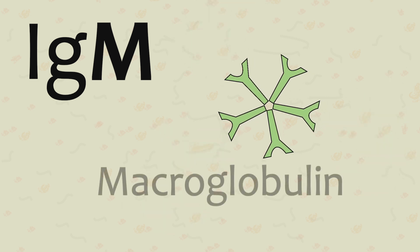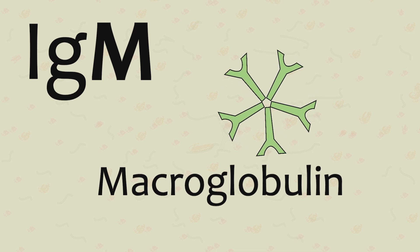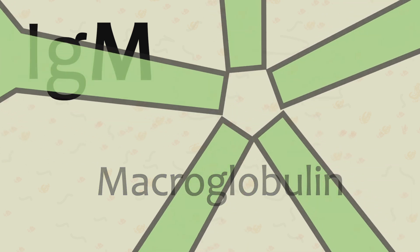IgM's are known as a macroglobulin because of their large size. They are the largest of the immunoglobulins and make up 6-10% of the total Ig pool.